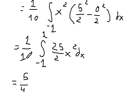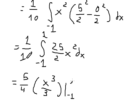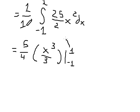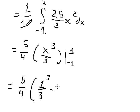Now integrating x squared, we get x to the power of three over three. We evaluate with bounds from negative one to positive one — substituting positive one and negative one into x cubed over three. We calculate and get five over six.